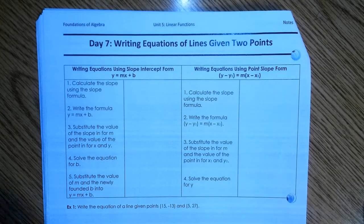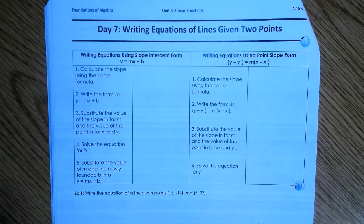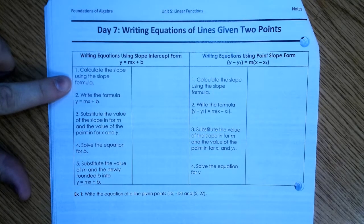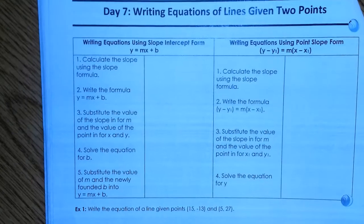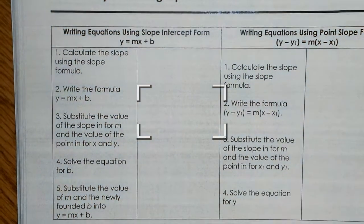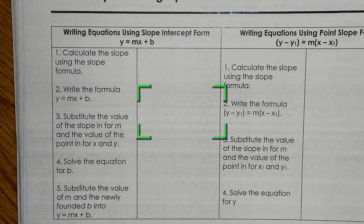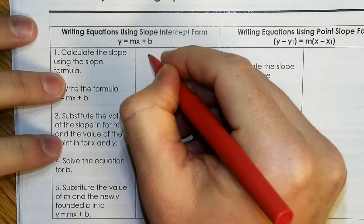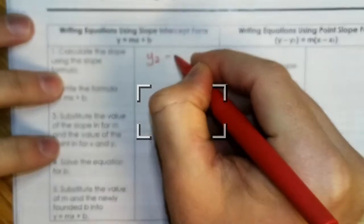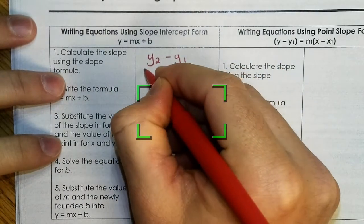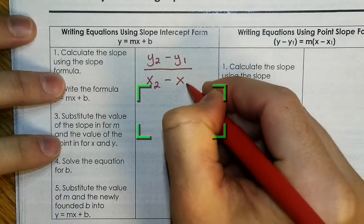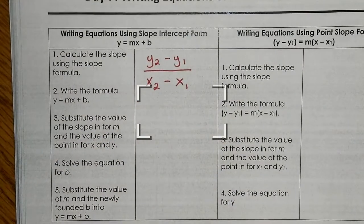So, what we have to use when we're given two points, notice what it says. Calculate the slope using the slope formula. Do y'all remember the slope formula? It's okay to say no. The slope formula is this: Y2 minus Y1 over X2 minus X1. That is the slope formula.